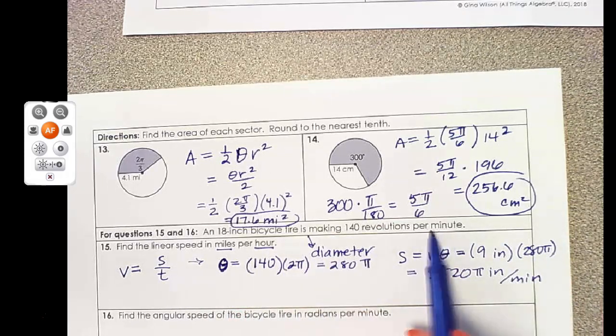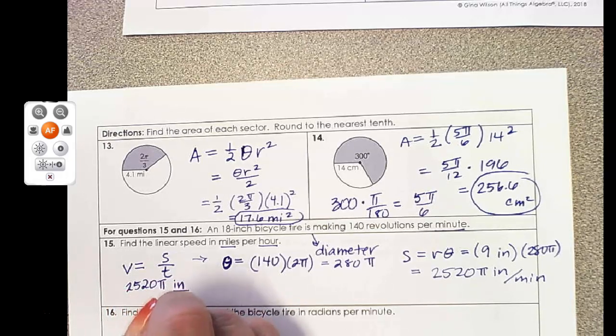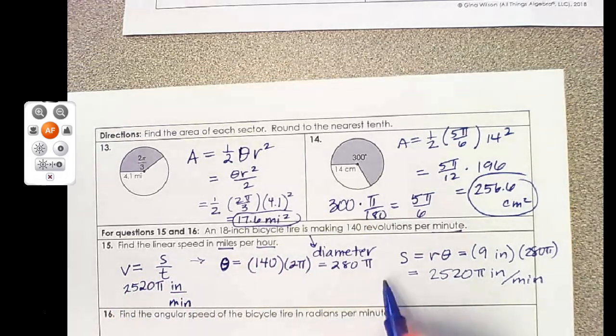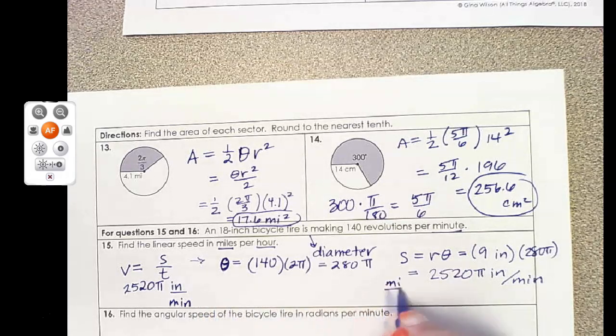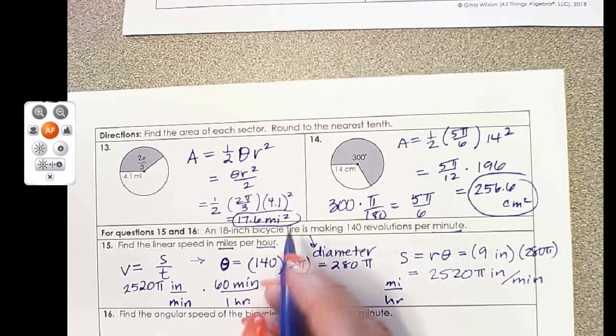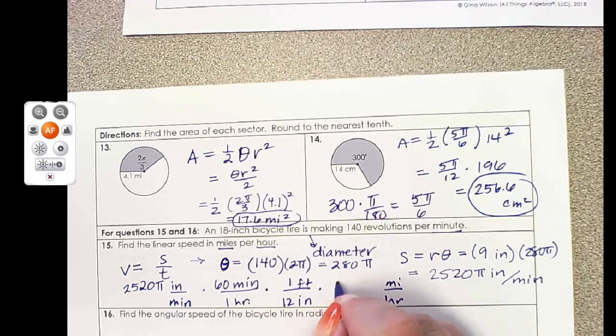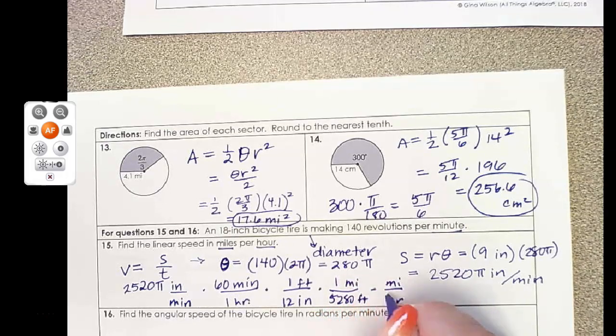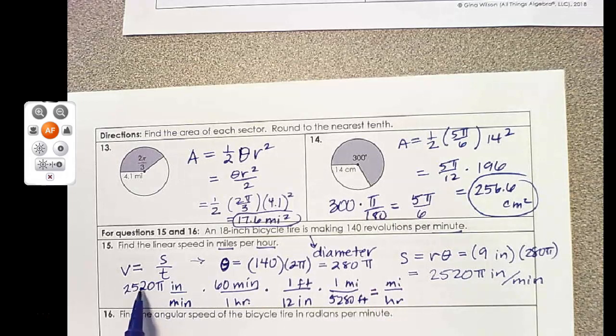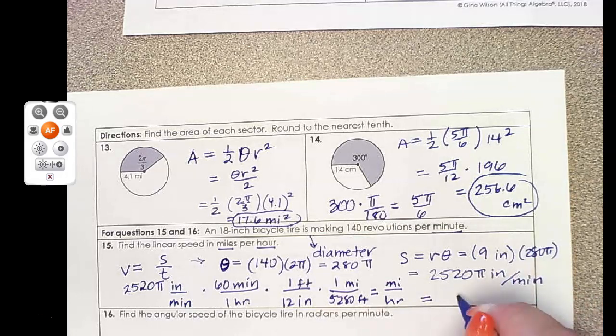And I am looking for miles per hour. So that's inches per minute, because that's all in one minute. So if I want to convert that, 2,520π inches per minute. I need to get to miles per hour. I'm going to go with 60 minutes in one hour. And then I'm going to go with 1 foot is 12 inches. And then 1 mile is 5,280 feet. So when I multiply on the top, 2,520π times 60. And then I'm going to divide that by 12 times 5,280. And all together, you should get 7.5 miles per hour.